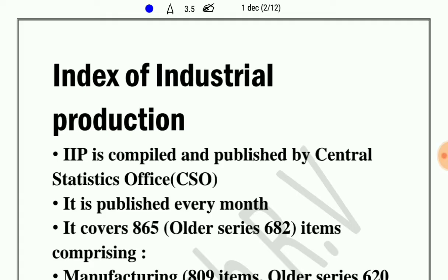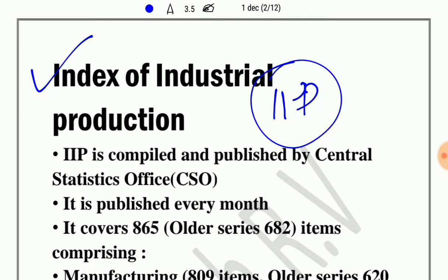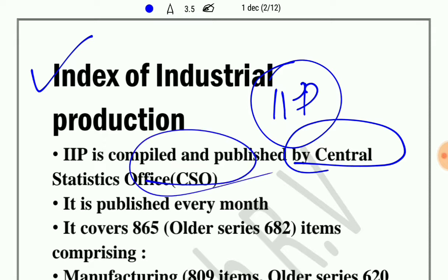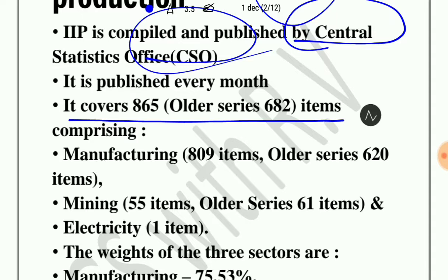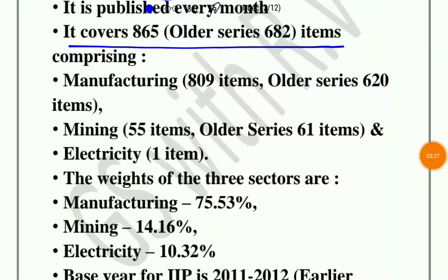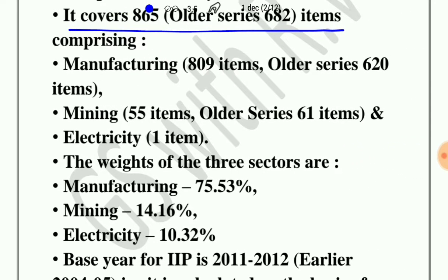What are the roles and functions of CSO? The Index of Industrial Production, IIP, is compiled by CSO — the Central Statistics Office. It is published every month, collecting data to explain the downward or increasing trend of the eight core industries. It covers 865 items in the new series, previously it was 682 items. Out of these, manufacturing accounts for 809 items in the new series, while in the old series it was 620 items.